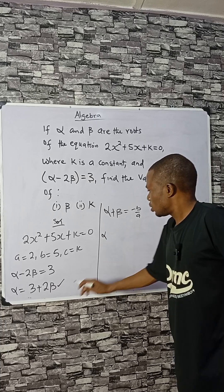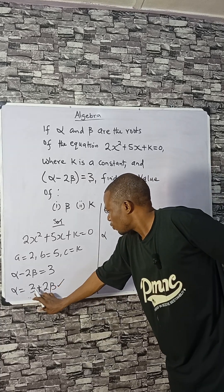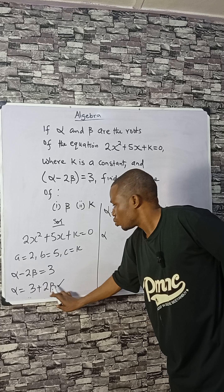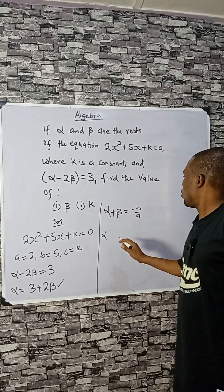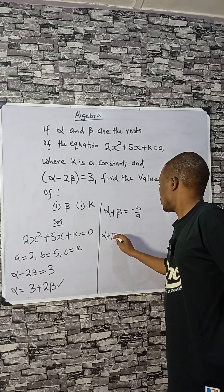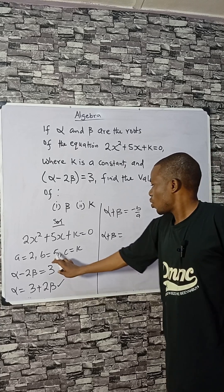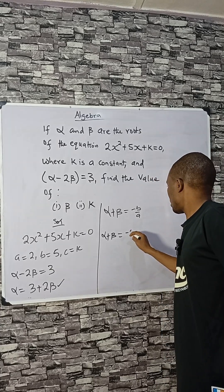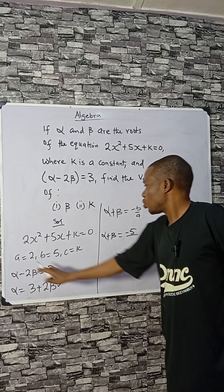But we are told that alpha is 3 plus 2 beta. Now alpha plus beta, where b is 5, equals minus 5 over a, which is 2.